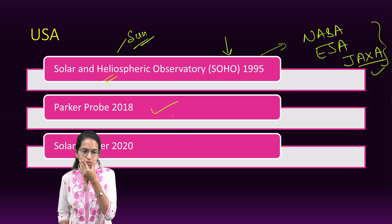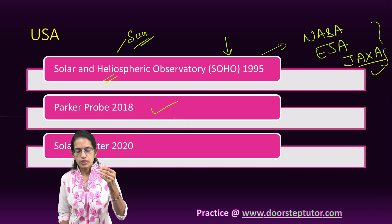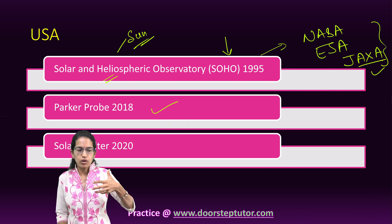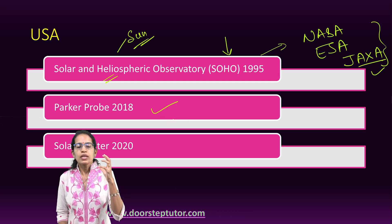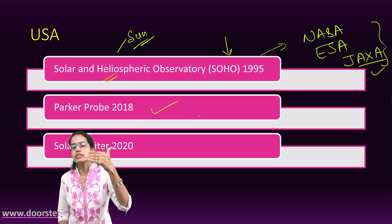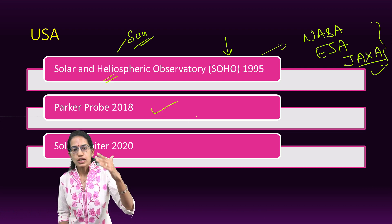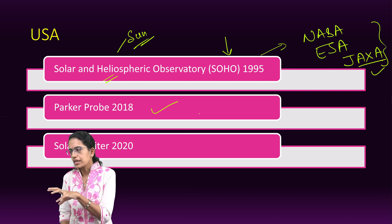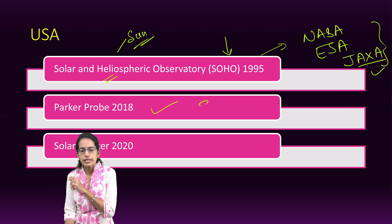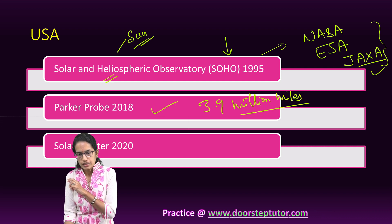The next was the Parker Probe, launched in 2018. It was relatively smaller than the Solar Orbiter and was the first mission to touch the surface of the sun, flying nearly 3.9 million miles — making it a very interesting mission.